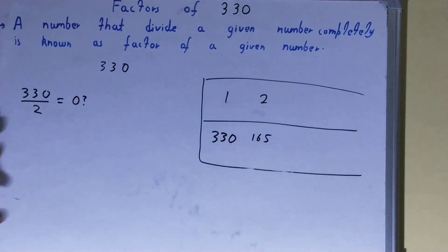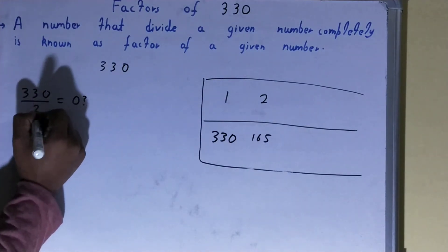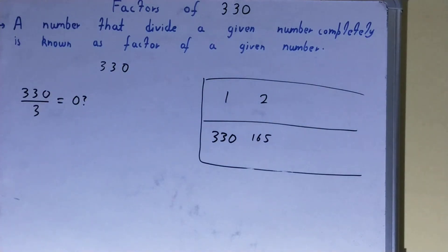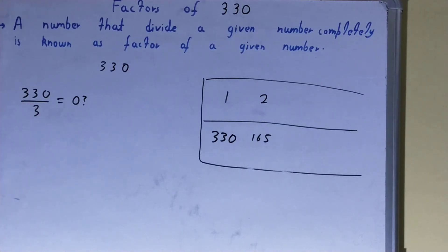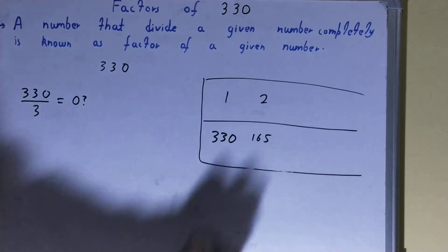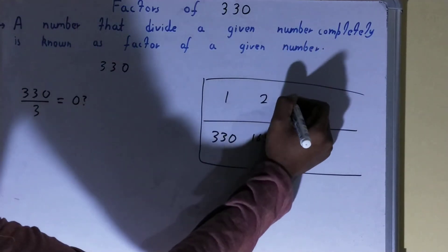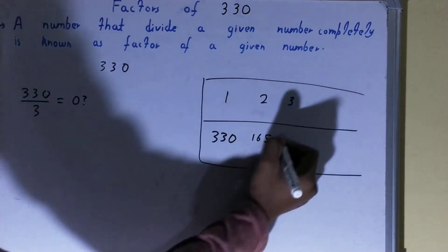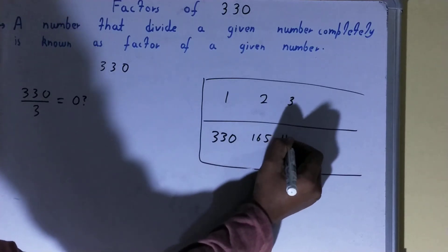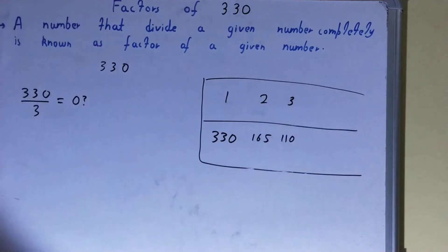After 2, we will check with 3. Is the number 330 divisible by 3? Yes. So 3 is a factor. And 3 into what times? 3 into 110 times. So 110 will also be a factor.